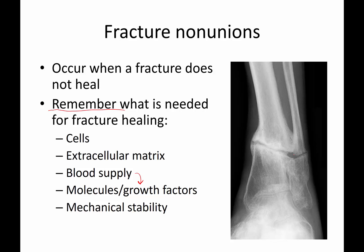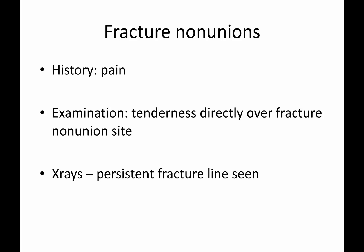Here you can see an example of a non-union — a fracture that has not healed here, and has not healed here. You can see there's a little bit of bone trying to heal, but the gap even propagates into the area where it's trying to make bone. Importantly, a patient with a fracture non-union is going to have pain right at the fracture non-union site, or tenderness at the non-union site.